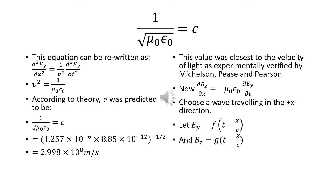We rewrite this as ∂²Ey/∂x² = (1/v²) ∂²Ey/∂t², where v² = 1/(μ₀ε₀). According to theory, v was predicted to be 1/√(μ₀ε₀) = c, the speed of light. We can calculate this and confirm it comes out to be 2.998 × 10⁸ meters per second — a value closest to the velocity of light as experimentally verified by Michelson, Pease and Pearson.